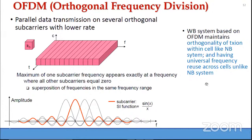Wideband systems based on OFDM maintain orthogonality of transmission within the cell, like narrowband systems. Even though every user in a cell makes use of the entire bandwidth, because of Orthogonal Frequency Division Multiple Access (OFDMA), we have orthogonality of transmissions within the cell.